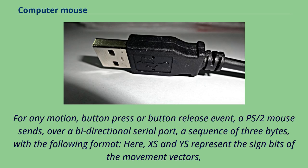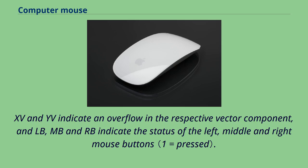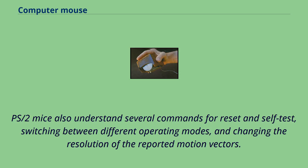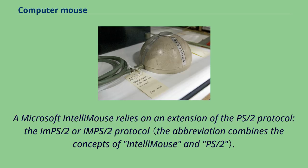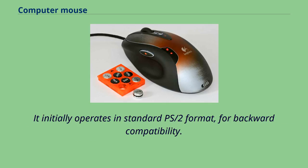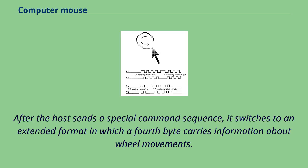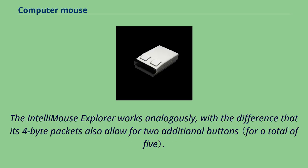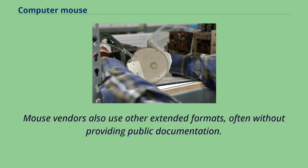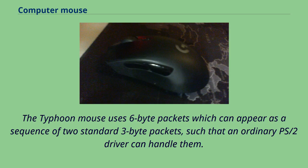The overflow bits XO and YO indicate overflow in the respective vector component, and LB, MB, and RB indicate the status of the left, middle, and right mouse buttons. PS/2 mice also understand several commands for reset and self-test, switching between operating modes, and changing the resolution of reported motion vectors. A Microsoft IntelliMouse relies on an extension of the PS/2 protocol — the IMPS/2 protocol — initially operating in standard PS/2 format for backward compatibility; after the host sends a special command sequence it switches to an extended format where a fourth byte carries information about wheel movements. The IntelliMouse Explorer works analogously, with 4-byte packets that also allow for two additional buttons. The Typhoon mouse uses 6-byte packets which can appear as a sequence of two standard 3-byte packets, such that an ordinary PS/2 driver can handle them.